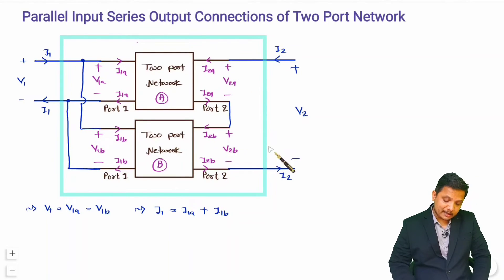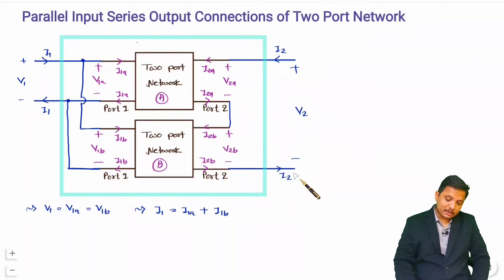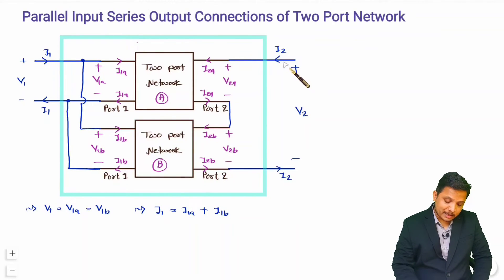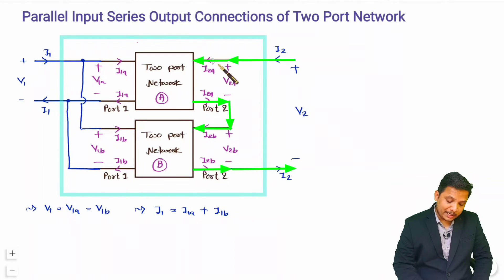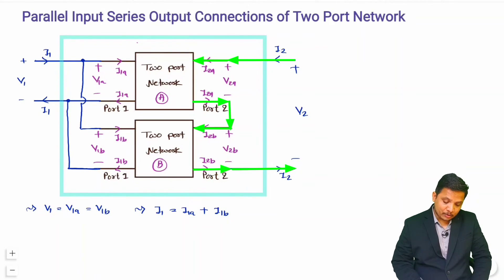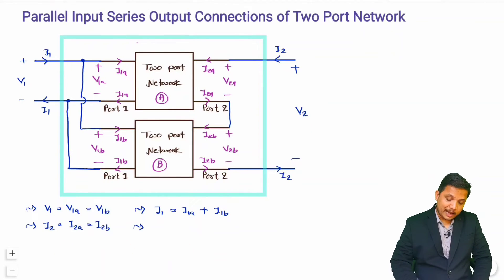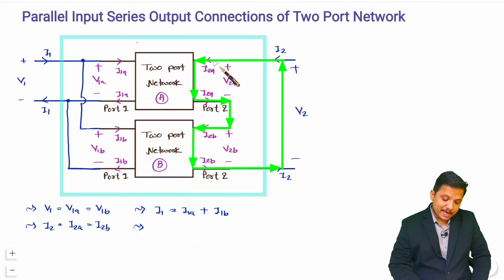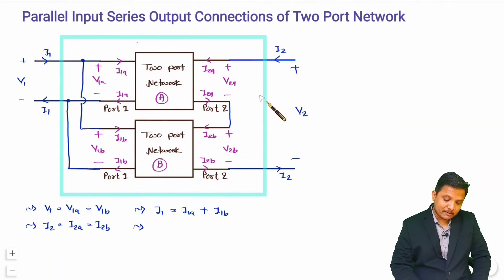At the output side we have a Series Connection, so current must be the same. Therefore I2 equals I2A equals I2B. Applying KVL in this loop, V2 equals V2A plus V2B.